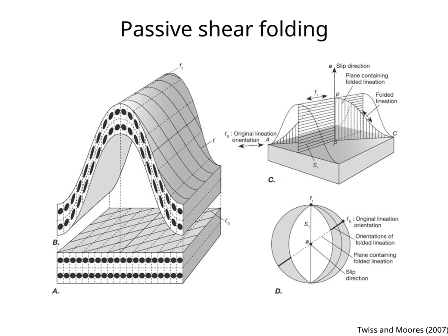This folded lineation is contained in the plane A, P, C on figure C. Figure D shows the fold axis, F1, the axial surface, S1,